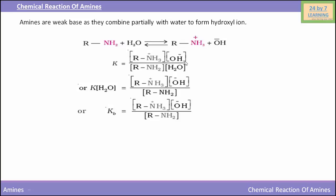K, the constant, equals [R-NH3+][OH-] divided by [R-NH2][H2O]. We can write this as K×[H2O] equals [R-NH3+][OH-] divided by [R-NH2]. Thus KB, which is the relative strength for base, will be [R-NH3+][OH-] divided by [R-NH2].